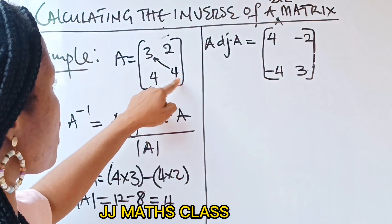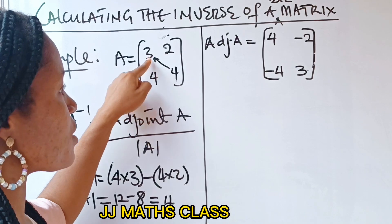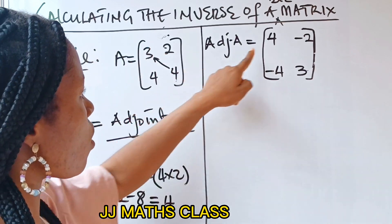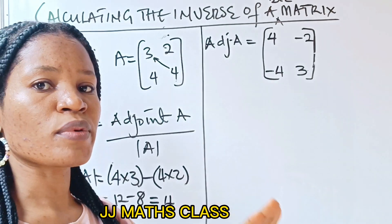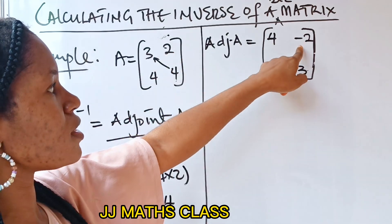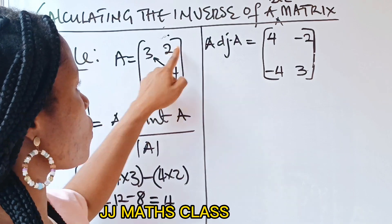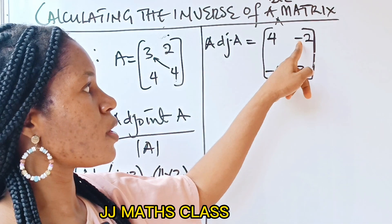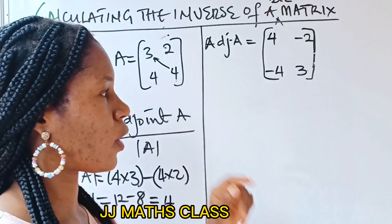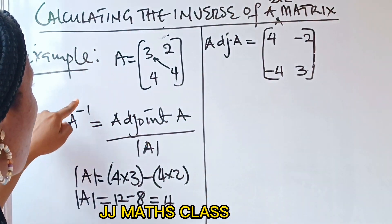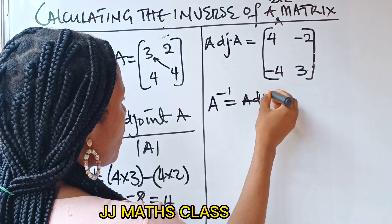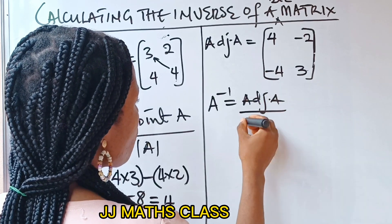What did we do? We exchanged the positions of the elements of the leading diagonal — 4 took the position of 3, and 3 took the position of 4. Then 2 and 4: all we did was change their signs. Initially 2 is plus 2, so we wrote minus 2. And 4 became minus 4. So we can now find our A inverse. Remember that A inverse is adjoint of A divided by the determinant of A.